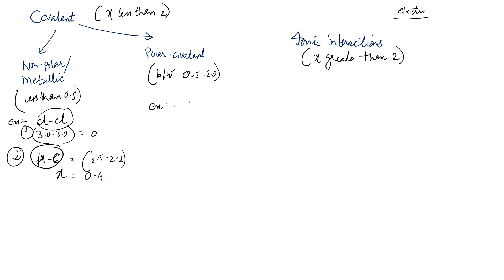And in the second example, we see that bonding is happening between hydrogen and chlorine. So electronegativity of hydrogen is 2.1 and of chlorine is 3. So 3 minus 2.1 gives us 0.9 electronegativity. So this is greater than 0.5, so this is a polar covalent bond.